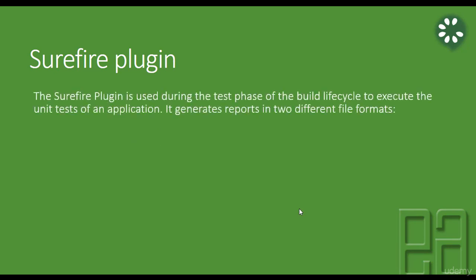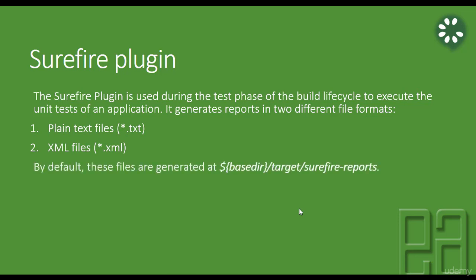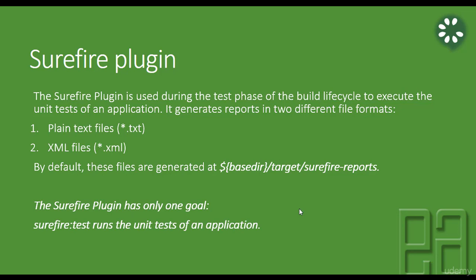What is the Surefire Plugin? This Surefire Plugin is used during the test phase of the build lifecycle to execute the unit tests of an application. It generates reports in two different file formats: plain text and XML. Many test reporting plugins use this XML file to generate a neat report. By default, these files are generated at the base directory target/surefire-reports. The Surefire Plugin has only one goal, which is the Maven Surefire test goal - it just runs the unit tests of an application.